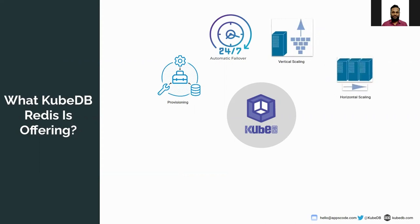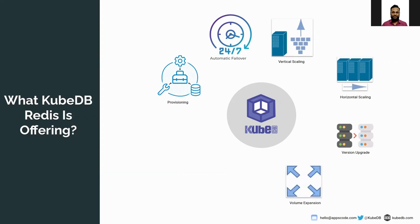KubeDB provides ops requests, using which you can scale your database horizontally or vertically according to your need. KubeDB also provides version upgrade — you can update your version by deploying a YAML. When your database grows larger, you can also expand the volume using KubeDB.